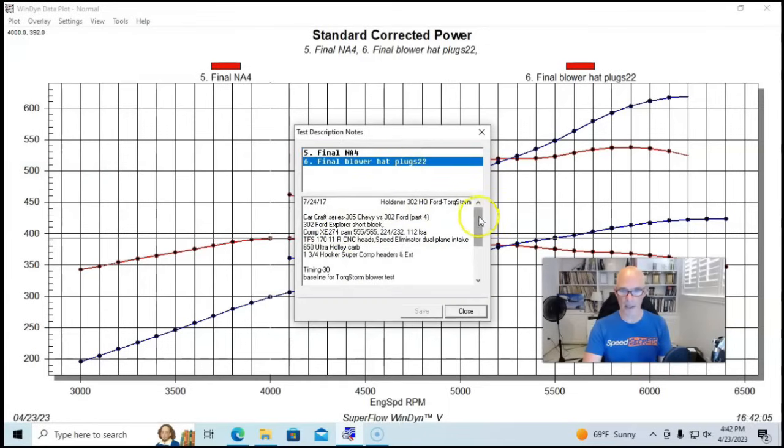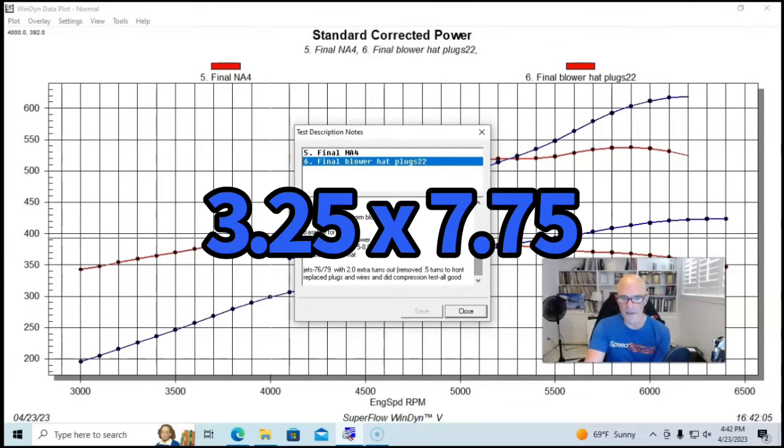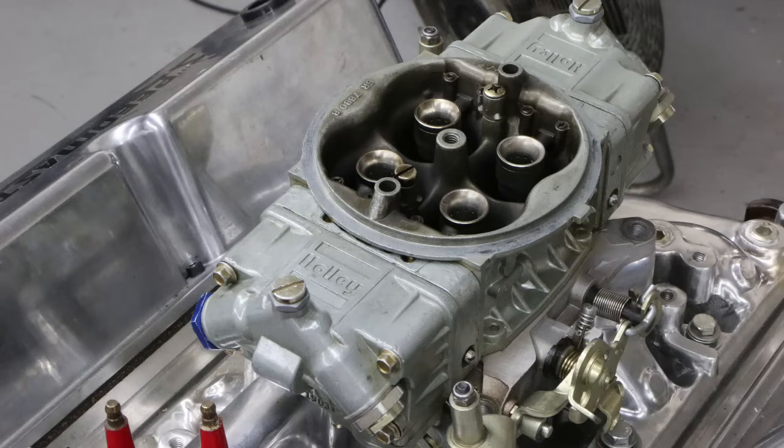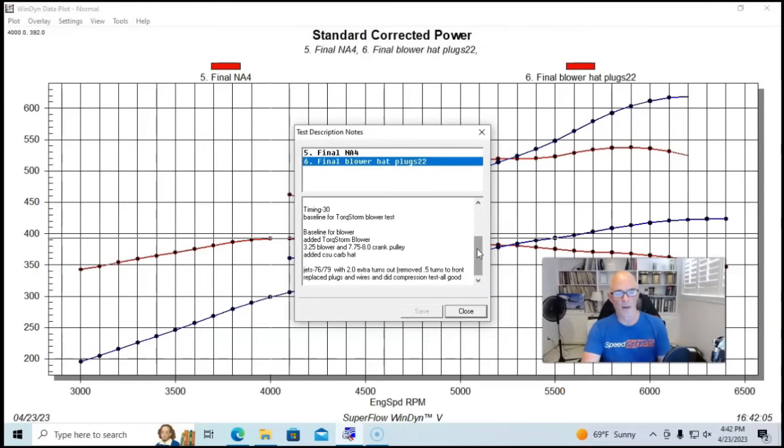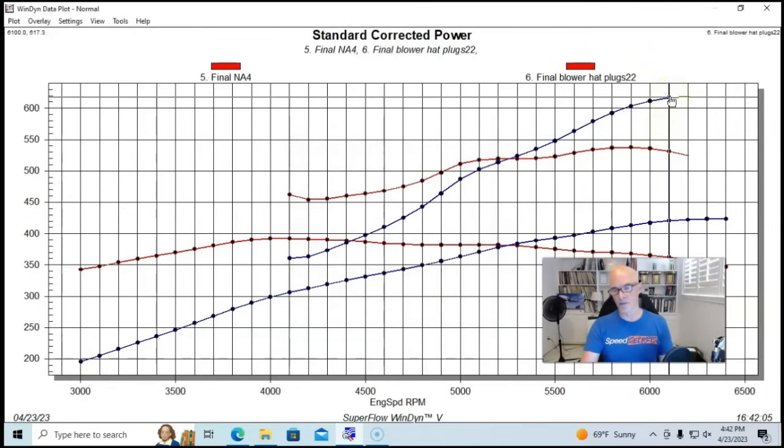We added the TorqStorm, a 3.25-inch blower pulley, and a 7.75 crank pulley. We added a CSU blow-through carburetor and carb hat. Obviously we did tuning with it, and that worked out pretty well.